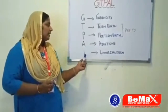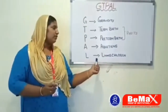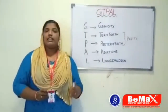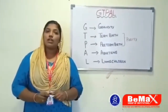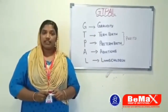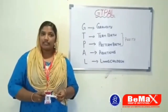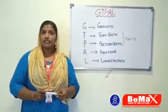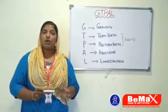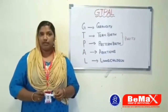The last letter is L. L stands for LIVING CHILDREN — the total number of living children. We count triplets, quadruplets, twins, and all living children of that woman.